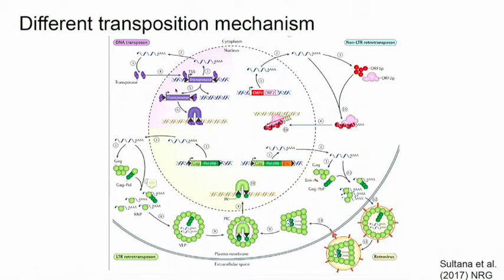For example, take DNA transposons like our favorite P element. It produces a transposase in the cytoplasm. Then this transposase enters the nucleus, binds some binding sites, and mobilizes the transposon to a different site.